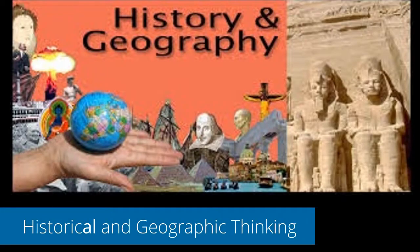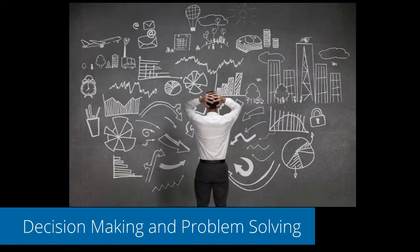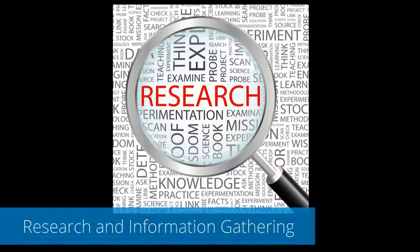Historical and geographic thinking, which includes learning some history of our world and some world geography — continents and countries. Decision-making and problem-solving, meaning that being a global citizen involves making decisions about yourself and your role in your world, and that our world is faced with some serious problems that need to be addressed. Research and information gathering — probably one of the more important skills in a global world — is researching and gathering information that is valid and factual, and not fake or biased.